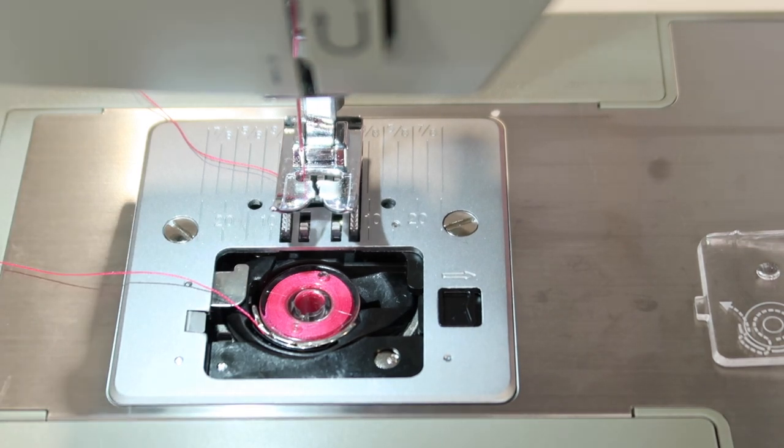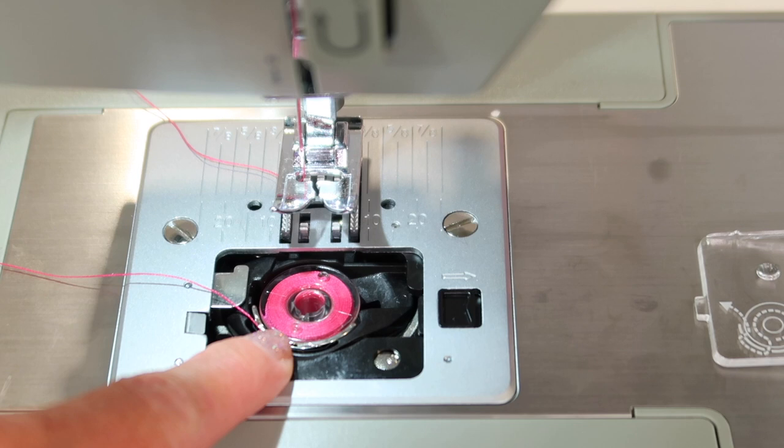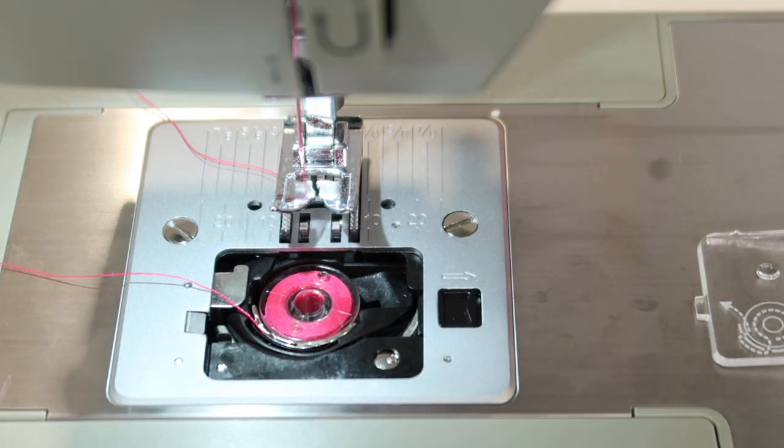You do need to use class 15 plastic bobbins. This is not the place to mix and match bobbins from other machines, and definitely don't use the metal class 15 bobbins. Those are heavier, and this is not calibrated for that heavier bobbin. Nothing wrong with a plastic bobbin, it's actually easier because it's clear. You can see before you're actually out of thread, and you go sewing along with no thread in your bobbin.